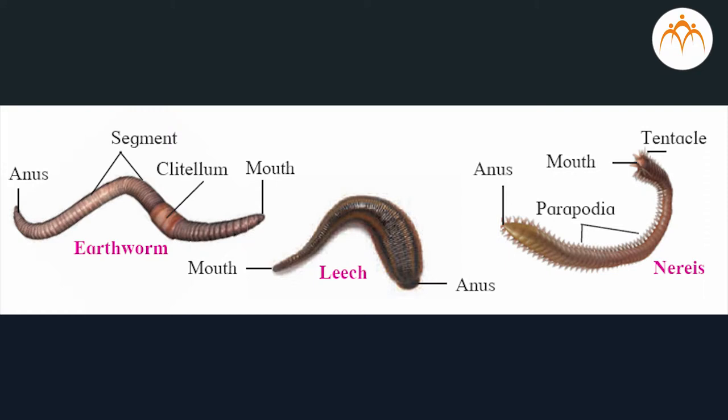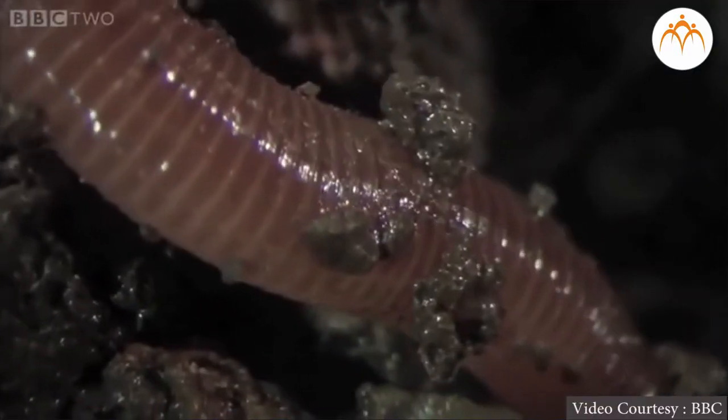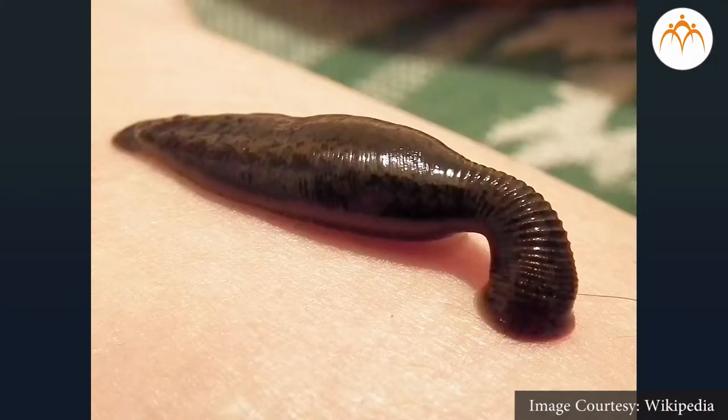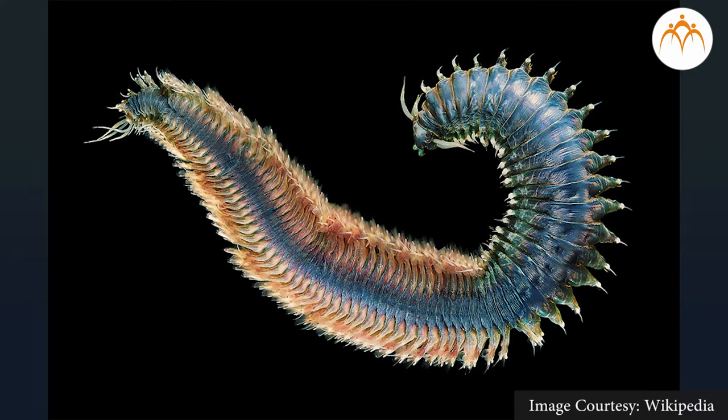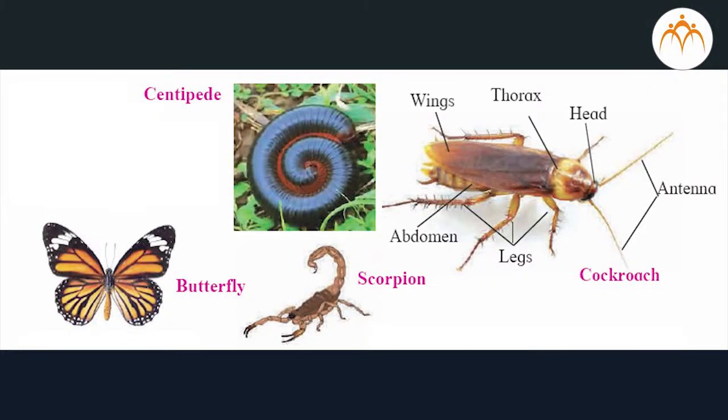These animals are either hermaphrodite or unisexual. Examples: earthworm, leech, Nereis, etc. Why is the earthworm called the friend of farmers? How may the leech be used in the Ayurvedic system of treatment?